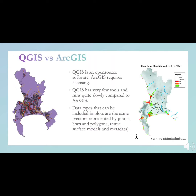This slide makes a comparison between QGIS and ArcGIS softwares. QGIS is an open-source software, whilst ArcGIS requires licensing. Due to this, QGIS is more accessible and can be considered better suited to small-scale projects. However, QGIS has very few tools and runs quite slowly compared to ArcGIS, as found when making maps for the Western Cape flood zones. ArcGIS performed better when adding multiple overlays and when presenting or visualizing the data. Due to the limitations of QGIS, all the maps that follow were made using ArcGIS, unless otherwise stated.